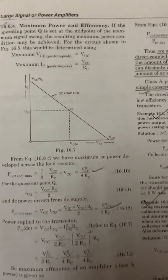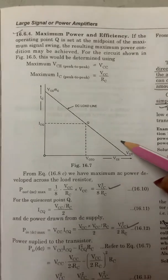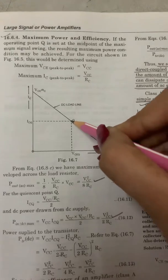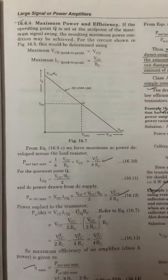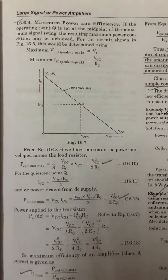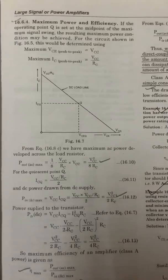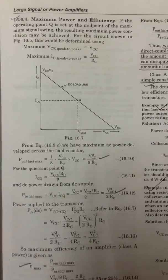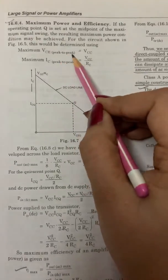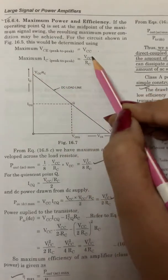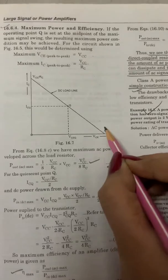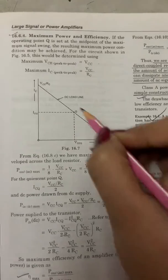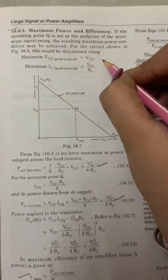For maximum power and efficiency, the Q-point operating point is always set at the middle of the DC load line. If the operating point Q is set at the midpoint of the maximum signal swing, the resulting maximum power condition may be achieved for the circuit. This would be determined using maximum VCE peak-to-peak = VCC and maximum IC peak-to-peak = VCC/RC. So maximum VCE = VCC and maximum IC = VCC/RC.